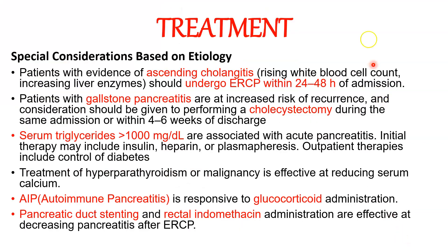Careful history, review of medications, selected lab studies, and abdominal ultrasound are recommended to assess etiologies that may impact acute management. If the patient has ascending cholangitis, ERCP should be done within 24 to 48 hours. Patients with gallstone pancreatitis should undergo cholecystectomy during the same admission or within four to six weeks of discharge. For elevated triglycerides, plasmapheresis or insulin and heparin therapy may be used. Elevated calcium requires treatment of hyperparathyroidism or malignancy. Autoimmune pancreatitis responds to glucocorticoids, and post-ERCP pancreatitis is managed with pancreatic duct stenting and rectal indomethacin.